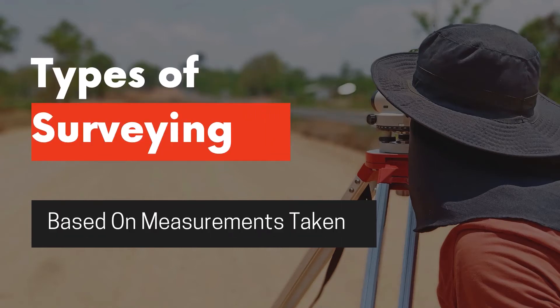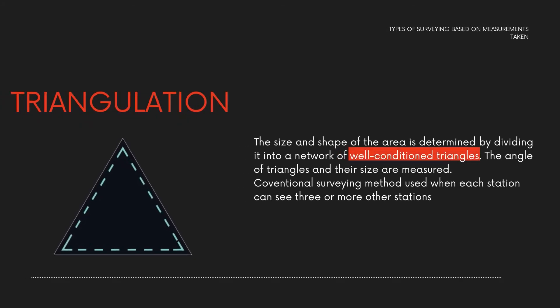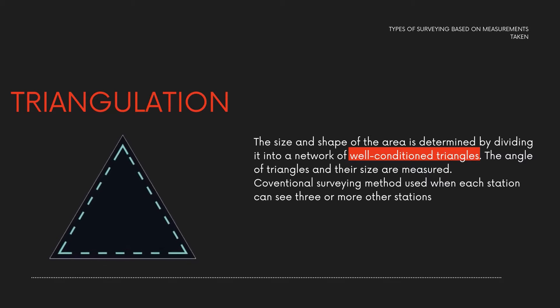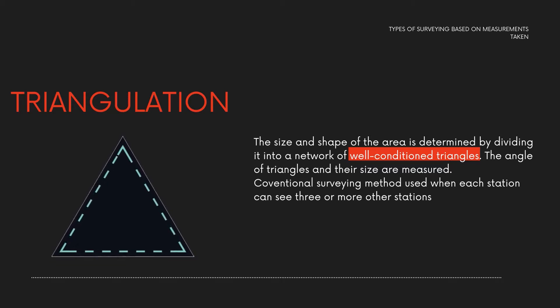Types of surveying based on the measurements taken. Triangulation: the size and shape of the area is determined by dividing it into a network of well-conditioned triangles, whose angles and sizes are measured. It is a conventional method used when each station can see three or more of the other stations.